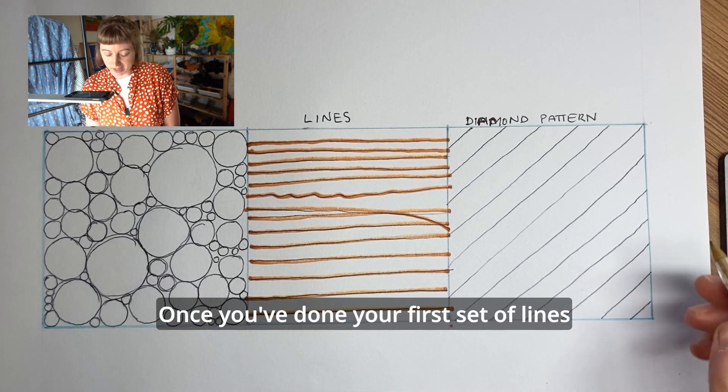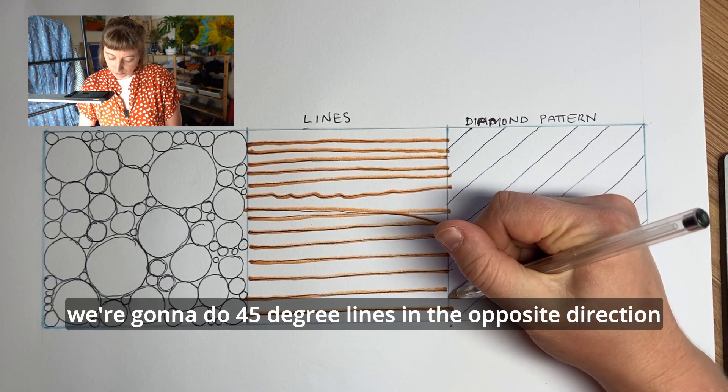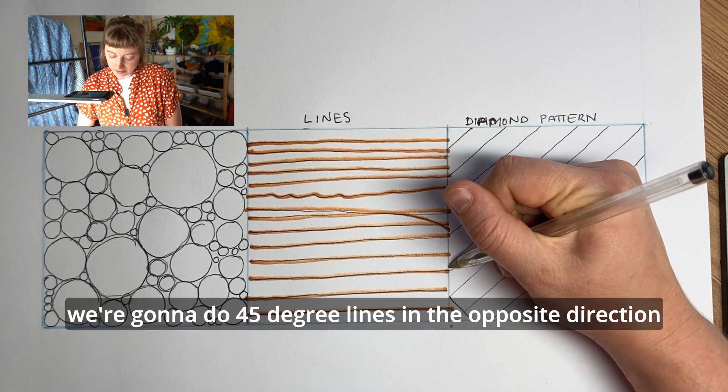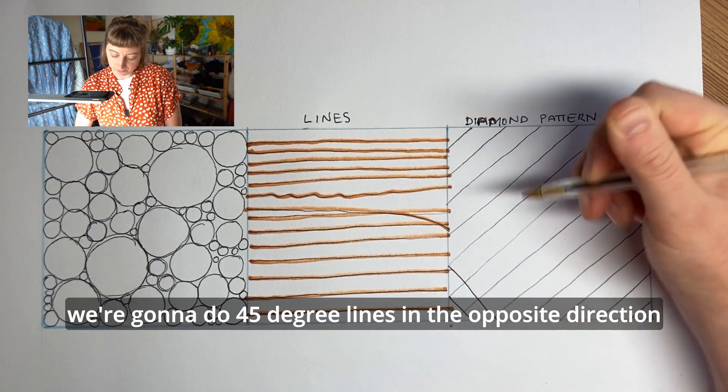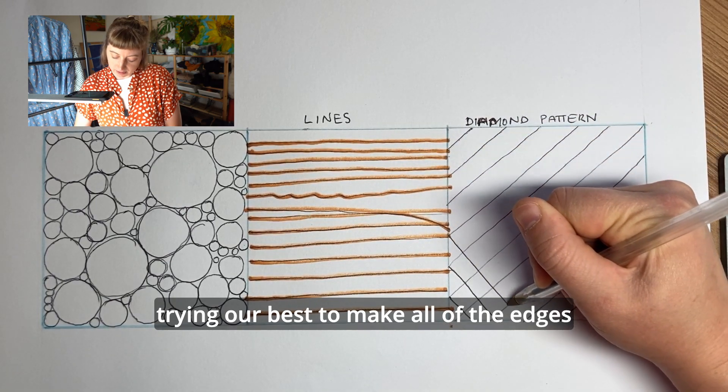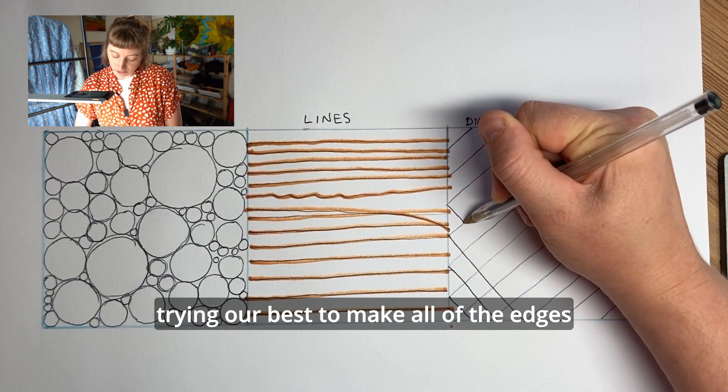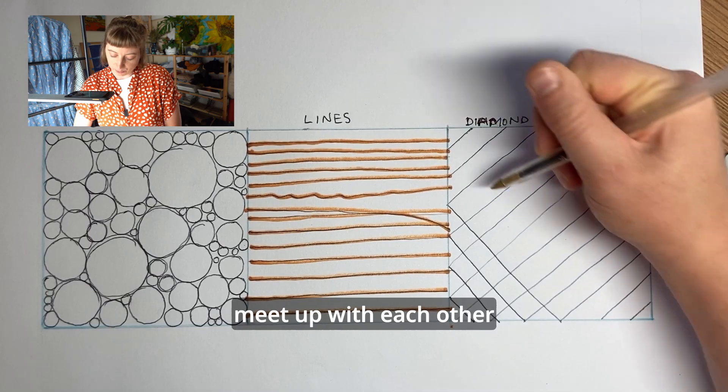Once you've done your first set of lines, we're going to do 45-degree lines in the opposite direction, trying our best to make all of the edges meet up with each other.